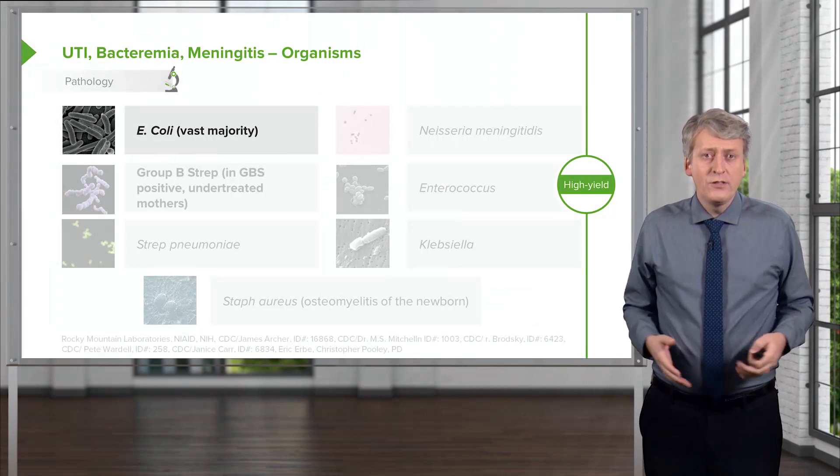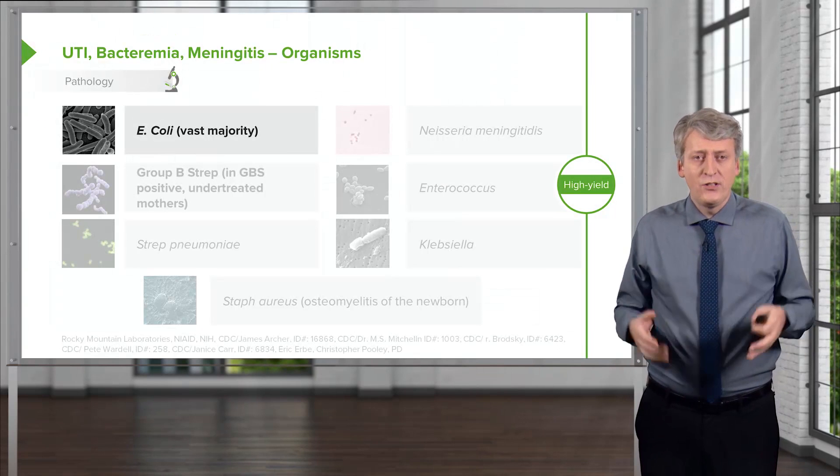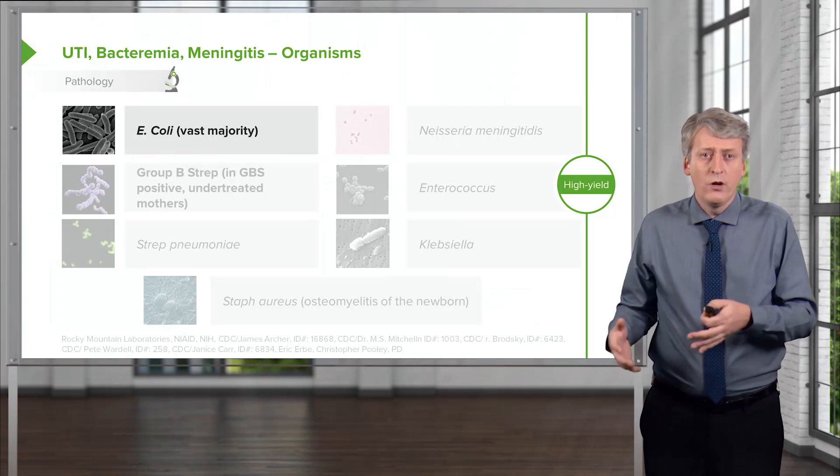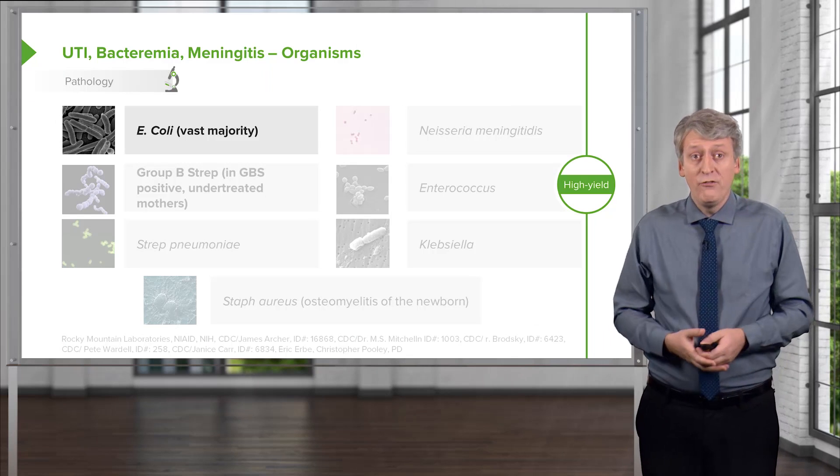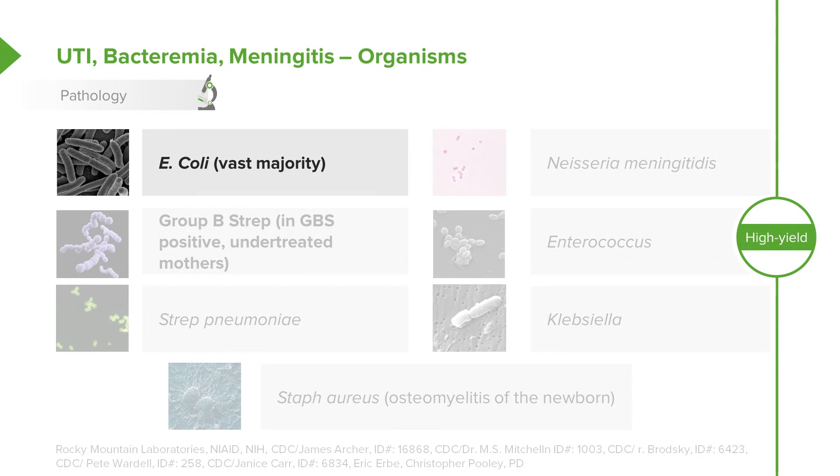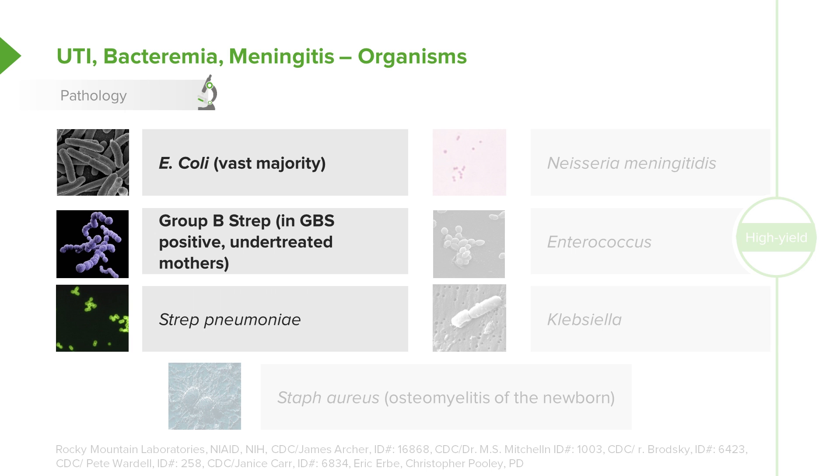The bacteria that cause these illnesses are very much the same. They're bacteria that the child is exposed to during the delivery process. Delivery is not a sterile phenomenon, as you've probably seen if you've been at one. And so they're at risk for mostly fecal organisms such as E. coli or vaginal organisms such as group B strep, especially in GBS positive mothers who were undertreated or untreated. Strep pneumoniae is not a typical bacteria that kids accrue at the time of birth, but it absolutely can cause sepsis in these children, although it's much less likely than in an older child.